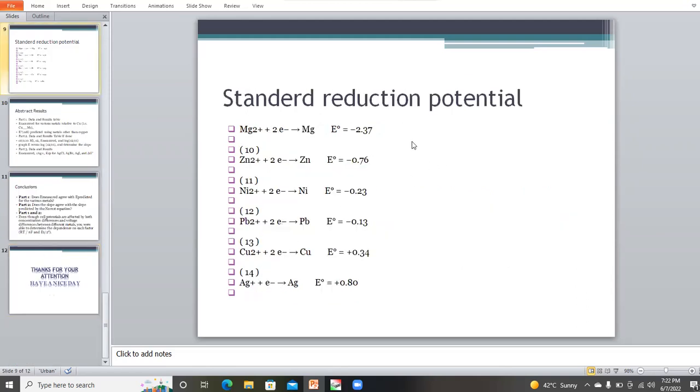By analyzing these equations, we can find the different reduction potentials of magnesium, zinc, nickel, lead, copper and silver. The reduction potential of magnesium is -2.337. The reduction potential of zinc is -0.76. The reduction potential of nickel is -0.23. The reduction potential of lead is -0.13. The reduction potential of copper is +0.34. And the reduction potential of silver is +0.80.